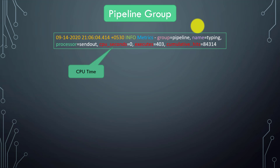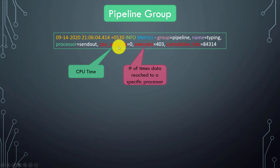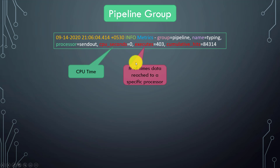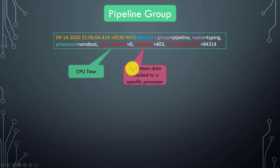There are two interesting fields for the pipeline group: cpu_seconds and executes. According to Splunk documentation, analyzing these two fields is enough. CPU seconds means how much CPU time was taken for this particular pipeline and processing phase. Executes is the number of times data reached a specific processor. For the send_out processor here, data reached it 403 times.